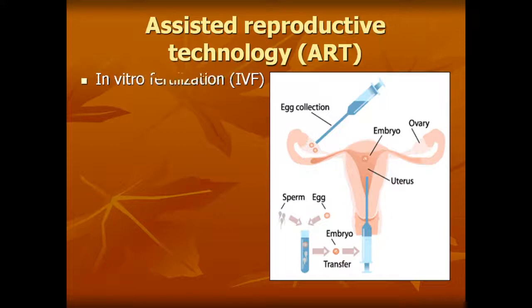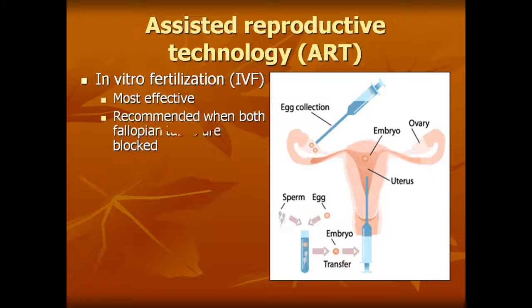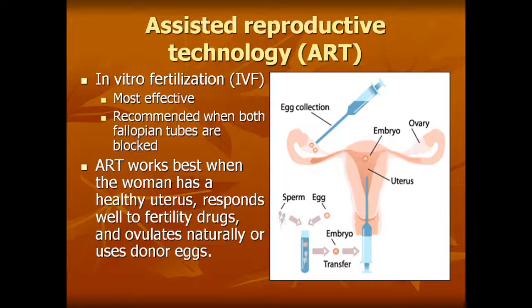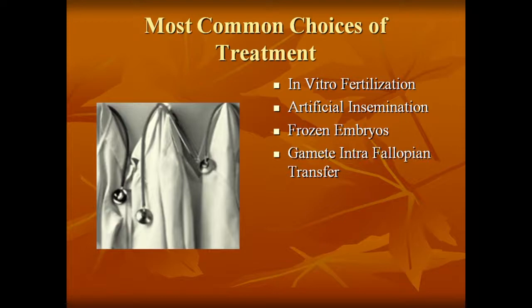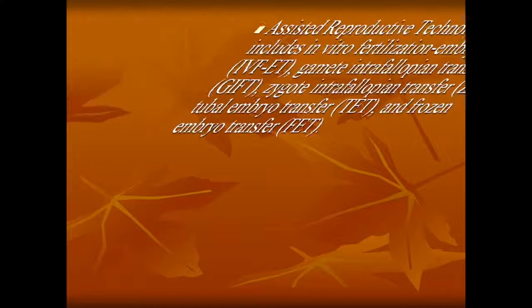In vitro fertilization (IVF) is the most effective and recommended when both fallopian tubes are blocked. IVF works best when the woman has a healthy uterus, responds well to fertility drugs, ovulates naturally, or uses donor eggs. Most common choices of treatment include in vitro fertilization, artificial insemination, frozen embryos, gamete intrafallopian transfer, and zygote intrafallopian transfer.